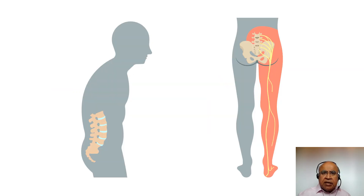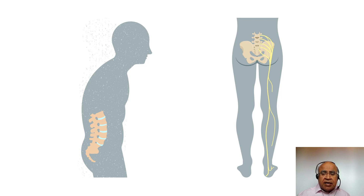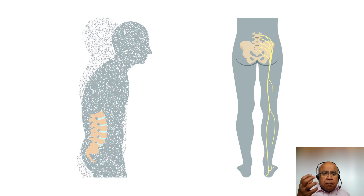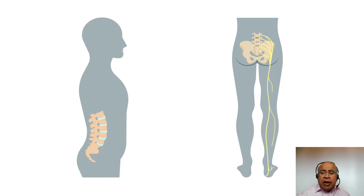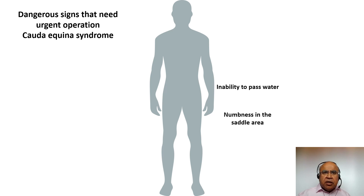As the prolapse decreases slowly, the leg pain improves. The pain goes initially from the foot, then the lower leg, the knee, the thigh, and the hip. Maybe the only pain that remains is the back pain — this is called centralization of pain, meaning the pain is coming back to the center. It also improves posture: the bent posture is gone and you may be able to stand erect. Majority of disc prolapses resolve with no intervention.